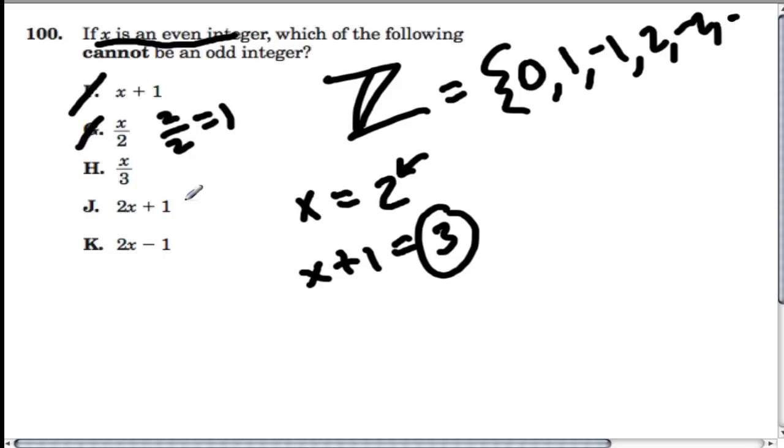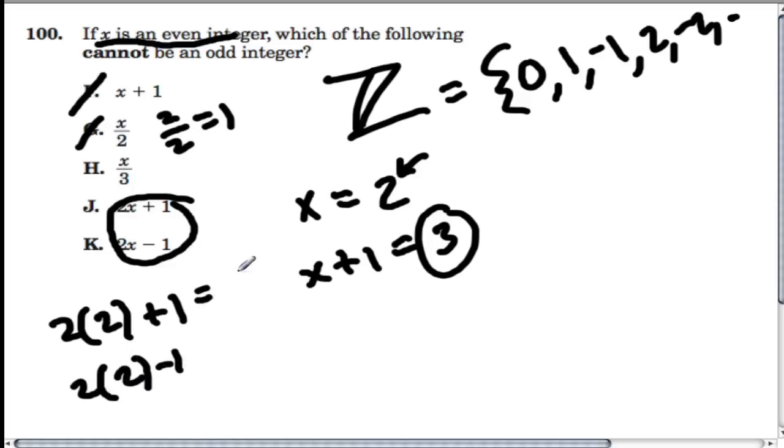J and K are kind of the same thing. You're either adding one or taking one away from twice X. So if X was two, it would be two times two plus one, or two times two minus one. In both cases we get odds. Four minus one is three, four plus one.